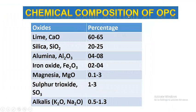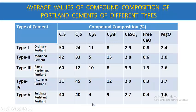The chemical composition of Ordinary Portland Cement is: calcium oxide (CaO) 60–65%; silica (SiO2) 20–25%; alumina (Al2O3) 4–8%; iron oxide (Fe2O3) 2–4%; magnesia (MgO) 0.1–3%; sulfur trioxide (SO3) 1–3%; and other alkalis like potassium oxide and sodium oxide 0.5–1.3%.